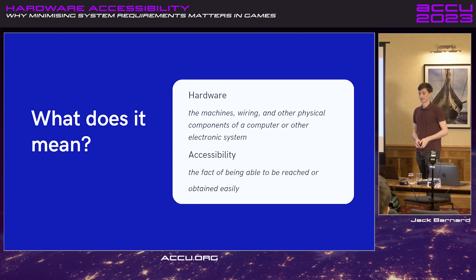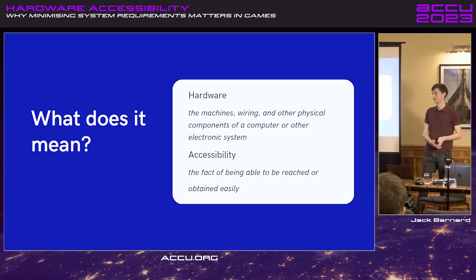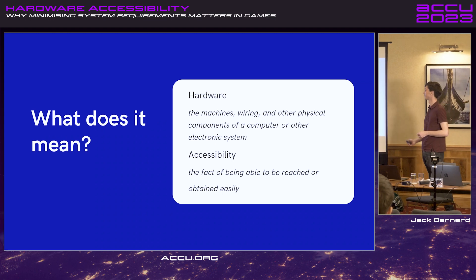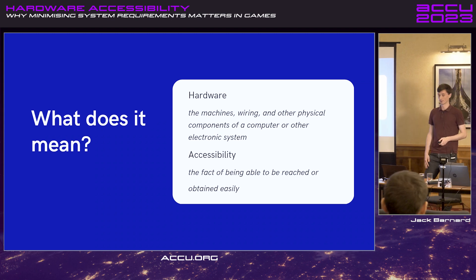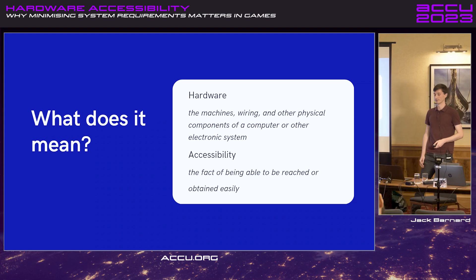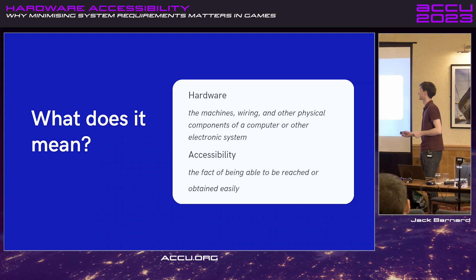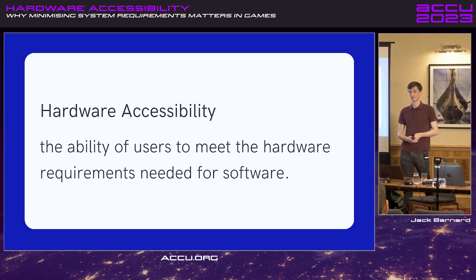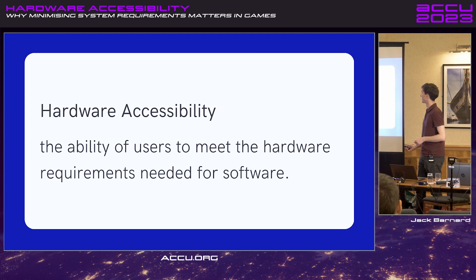So what is hardware accessibility? Hardware is the stuff our software runs on. Accessibility is also an important factor of what we're hopefully incorporating into the things we build — the ability to be reached or obtained easily. Together, I'm defining it as the ability of users to meet the hardware requirements needed for software, and today specifically, video games.